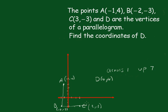So that's (4,4). Across 1, up 7, and that will keep it parallel to AB. So that's quite a neat little way of working out the coordinates.